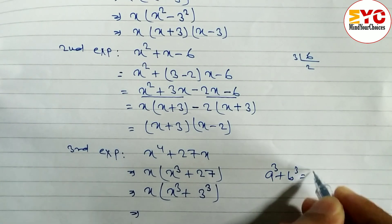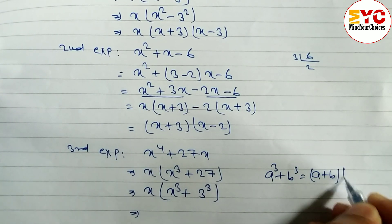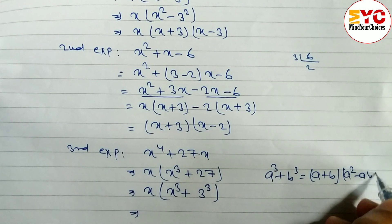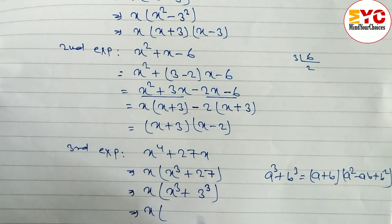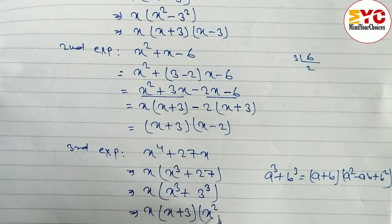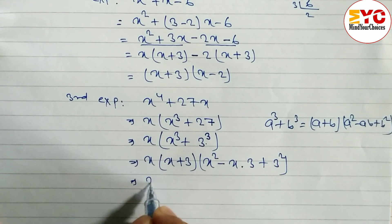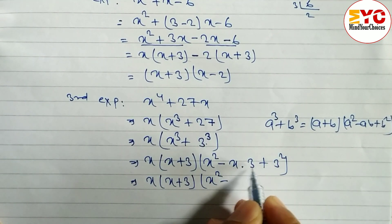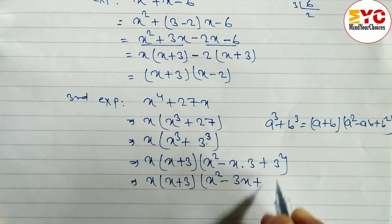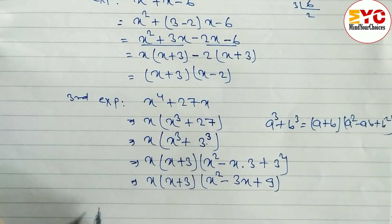The formula for a cube plus b cube is a plus b times a square minus ab plus b square. Here a is x and b is 3. So we write x times x plus 3 times x square minus 3x plus 9.